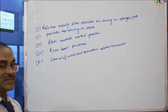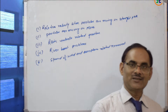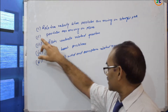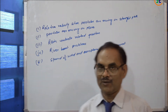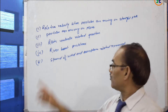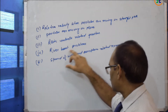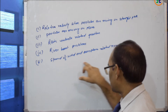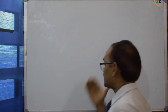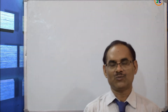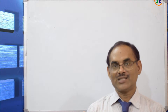In this session, we are going to discuss the first part — relative velocity when particles are moving in a straight path. After that, we will discuss particles moving in a plane, then rain-umbrella numericals, then the river-boat problem, and finally speed of wind and aeroplane related numericals. The first question in this session is related to the straight path.